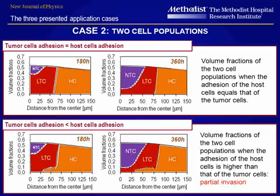Here, we see the influence of cell adhesion on the growth pattern. When the adhesion of the host cells and tumor cells is equal, the growing tumor cells displace the host cells, as shown in the top figure. There is a net separation between the tumor cells in red and the host cells in orange. Necrotic cells, shown in purple, appear at the center. In the lower figure, the adhesion of the host cells is higher than that of the tumor cells, and we see the tumor invading the host cell phase.